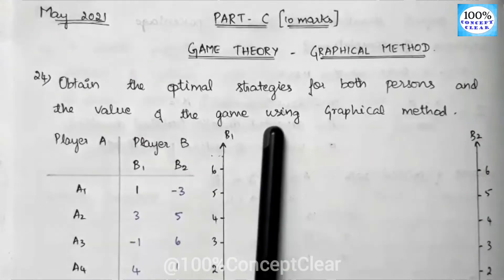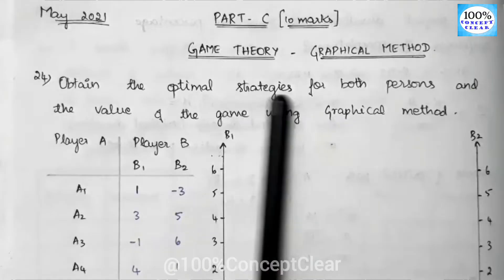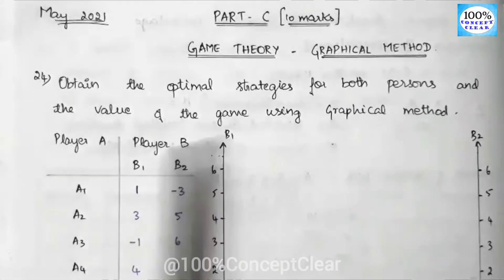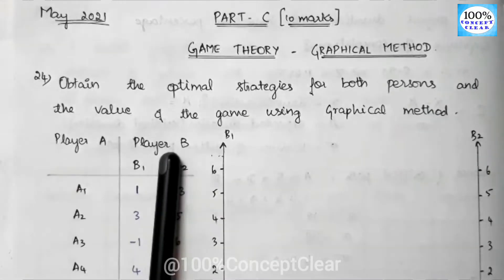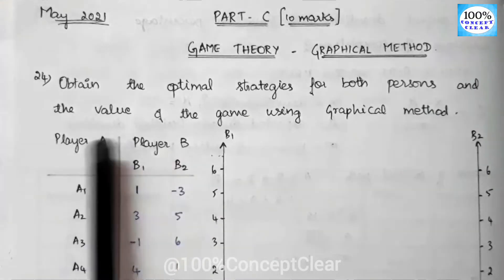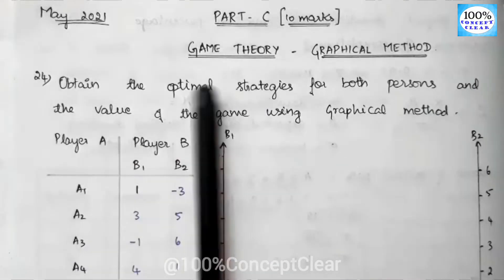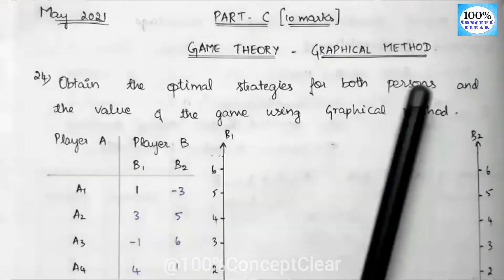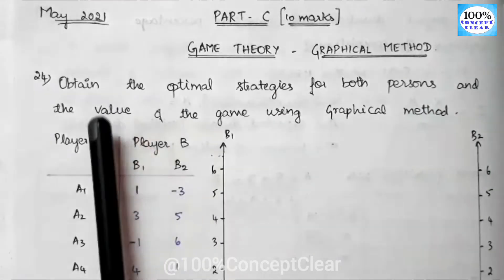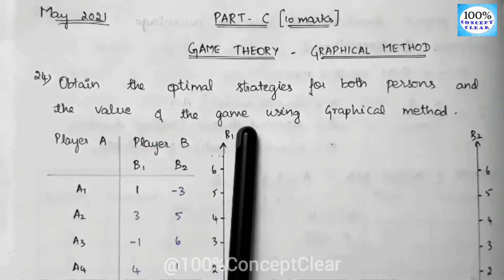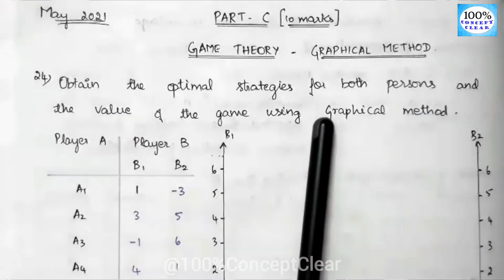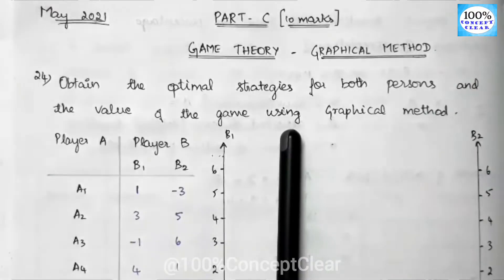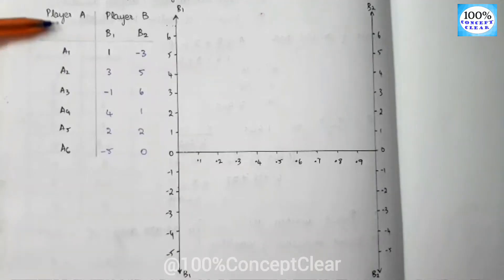We will solve the optimal strategies for both persons — Player A and Player B — and then we will find the value of the game. We will use the graphical method to solve this.